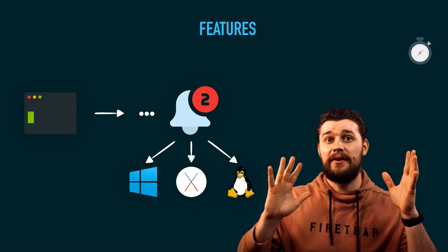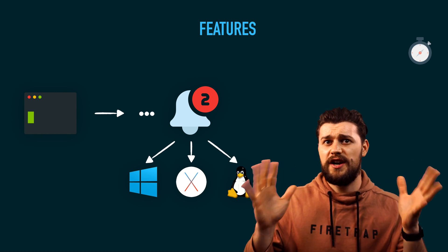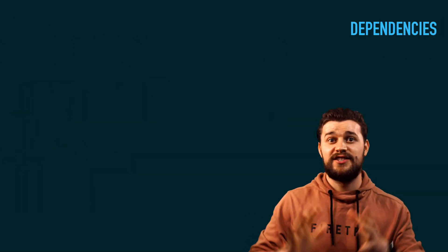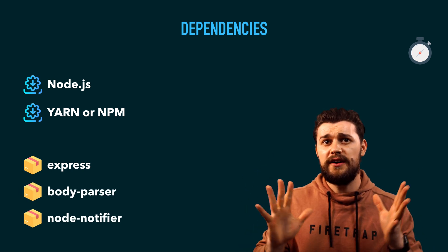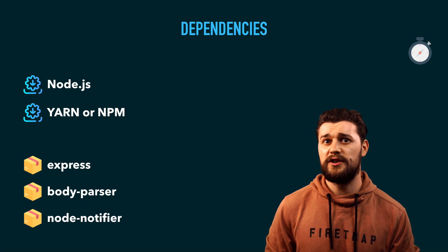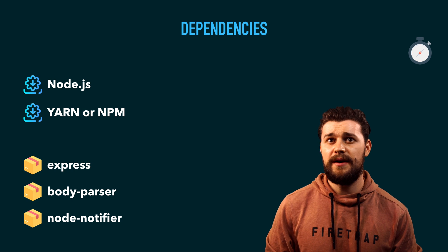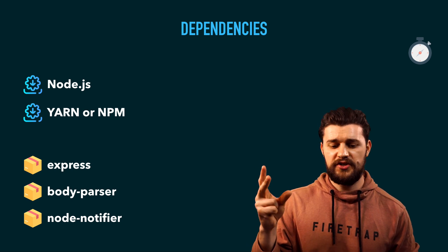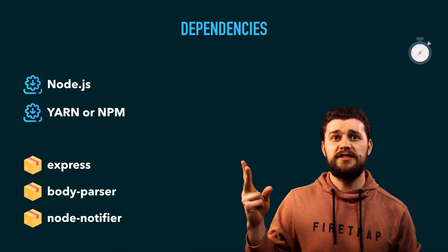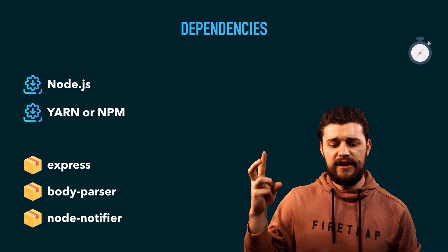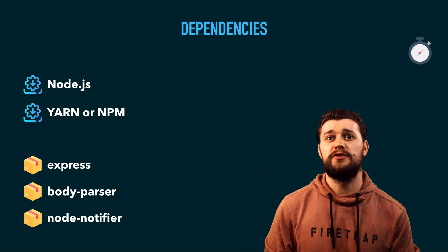Before we jump into anything, let's talk about dependencies, because there are some dependencies we need in order to run Node.js applications on the server side. We basically need Node.js and a package manager. I'm going to use the Yarn package manager, but you could also use NPM — that works perfectly fine. We're also going to need some third-party dependencies: express, body-parser, and node-notifier. Express gives us the HTTP server, body-parser helps us parse the request body, and node-notifier is responsible for sending OS notifications.